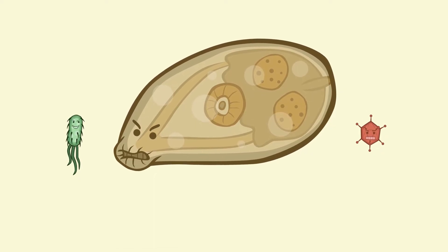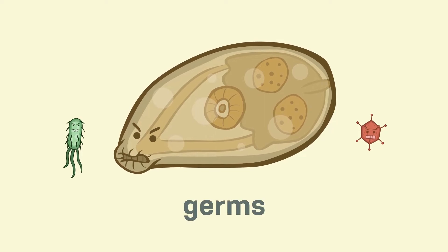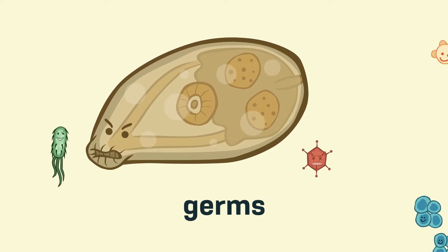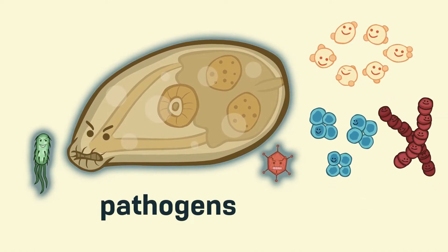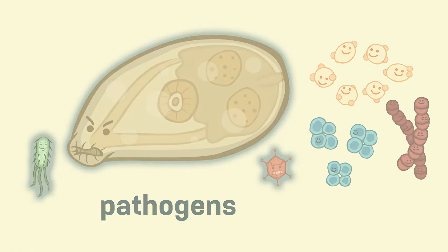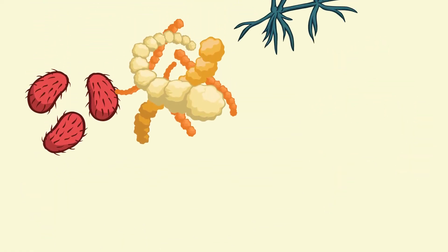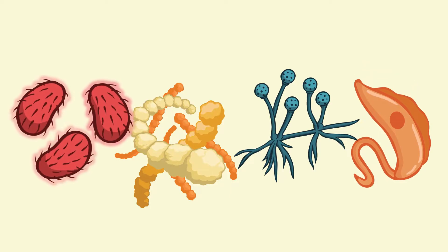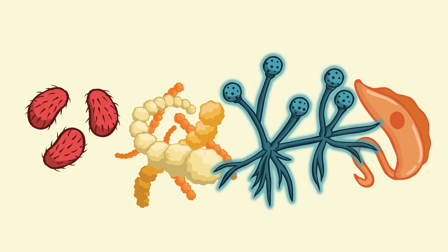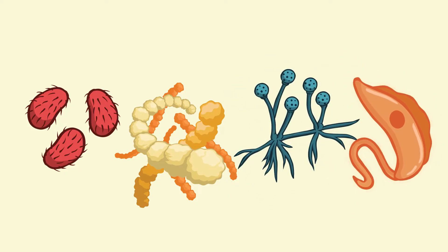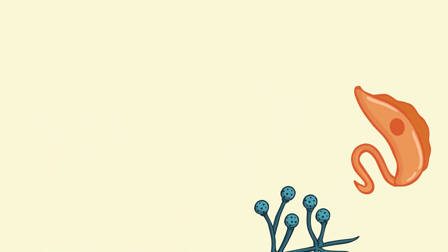Sometimes you may hear microorganisms referred to as germs. The important thing to remember is that not all microorganisms cause disease, but pathogens do. Generally, pathogens come in four different types. In this video, we'll describe each type of pathogen and talk about what separates these groups, how these organisms cause disease, and show some common examples.